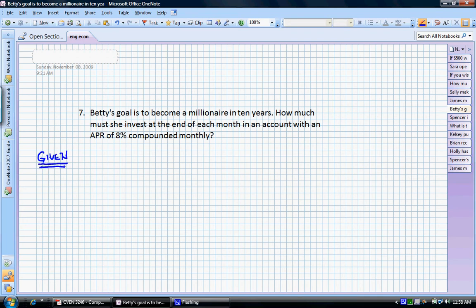All right, we know Betty wants to have a future value of at least $1 million. So let's find the minimum amount of money that Betty has to invest. We know that she's going to invest every month.